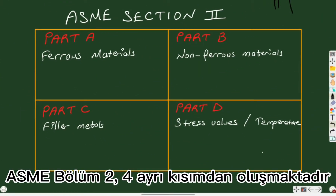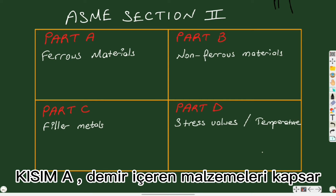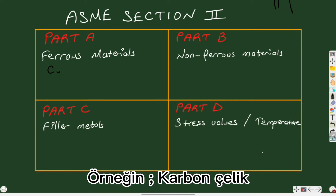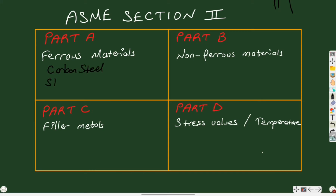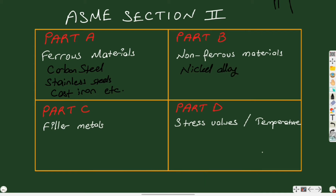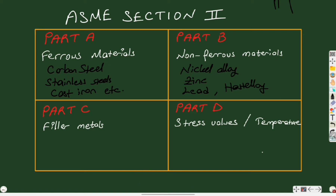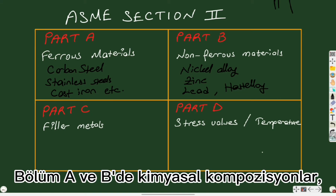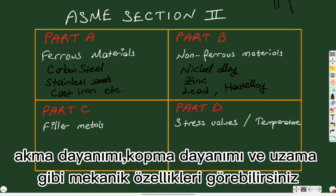There are four parts in ASME Section 2. Part A includes various material specifications like carbon steel, stainless steels, and cast iron. Part B is for non-ferrous materials like nickel alloy, zinc, lead, or Hastelloy alloy. In Part A and Part B you can see the chemical compositions and mechanical properties like yield strength, tensile strength, and elongation.